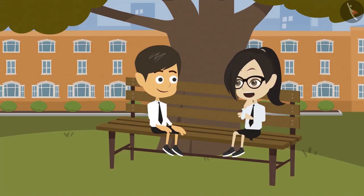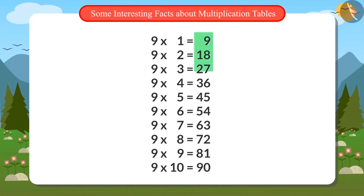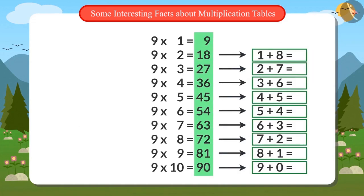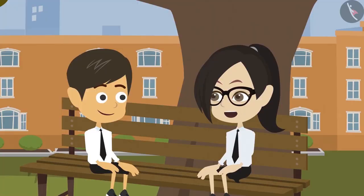Wow! This is interesting. When we add all the digits in the multiplication table of 9, the answer is 9. Do you also know some other interesting things about other tables too, Riyansh?